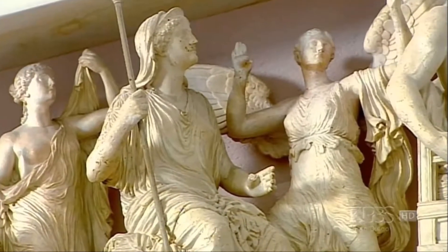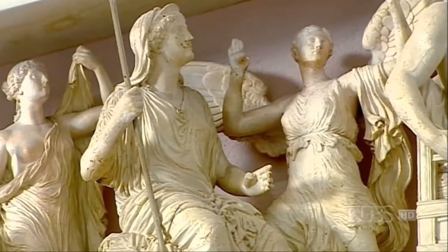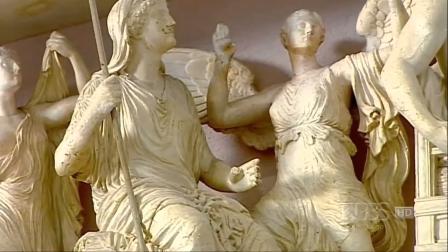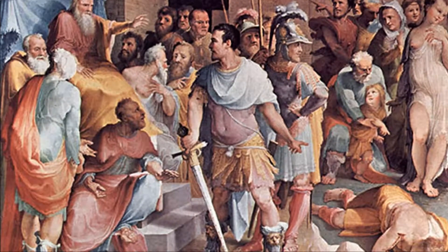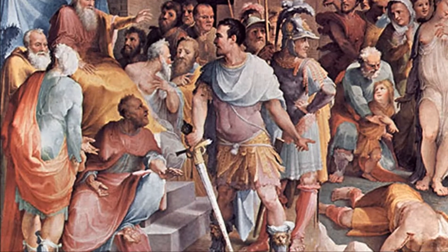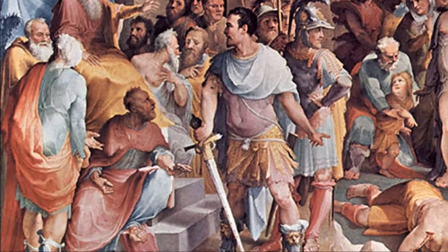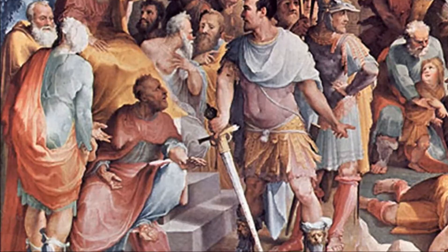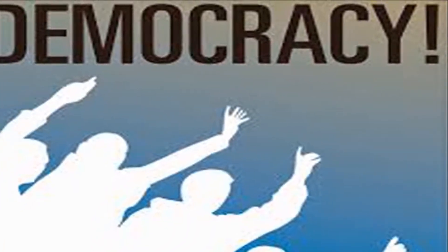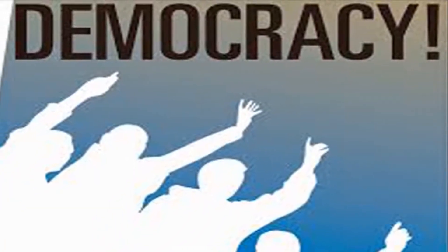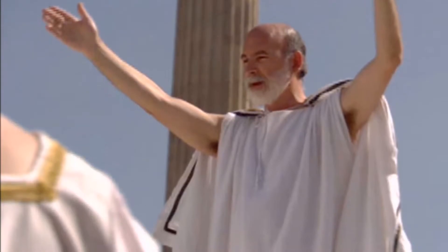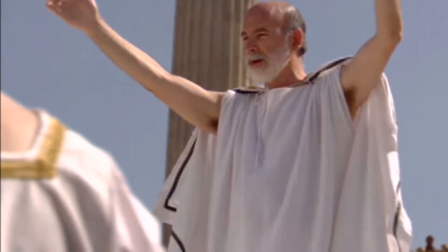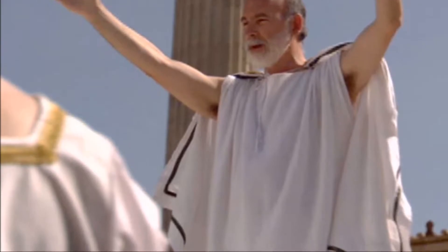In the city-states of ancient Greece, government was entirely in the hands of the richest section of the population. A few wealthy aristocrats controlled property, parliament, and finances, and no one else had a say. In 507 BCE, an Athenian statesman called Cleisthenes reformed this unfair system by giving ordinary citizens political rights.